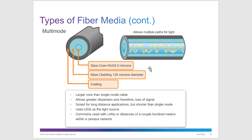Multi-mode is another form of fiber optic cabling with a thicker core. It potentially has higher transfer rates since more data can be sent through the thicker core. However, because it's thicker, data reflects off the inside of the cabling, causing greater signal loss — meaning it can't run as far as single-mode. Multi-mode uses LEDs as a light source and is commonly used for distances of a couple hundred meters within a campus network.